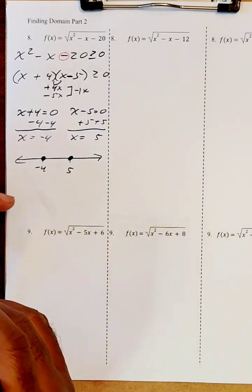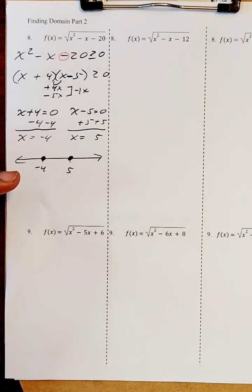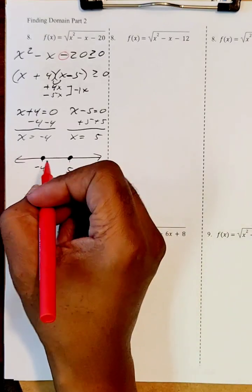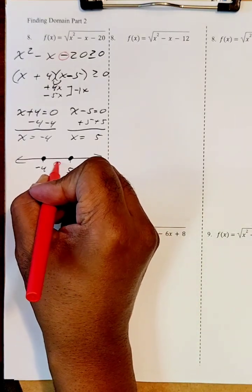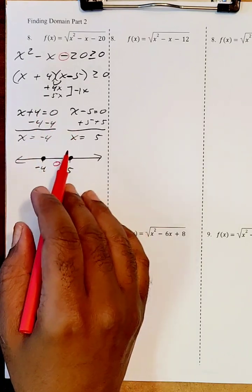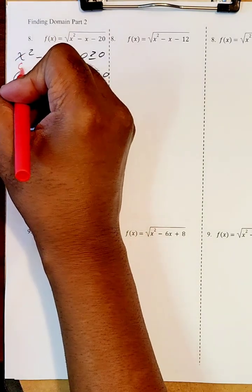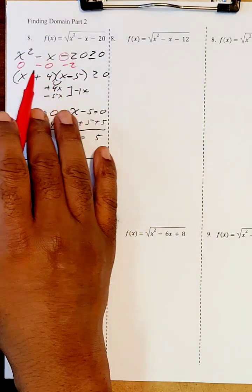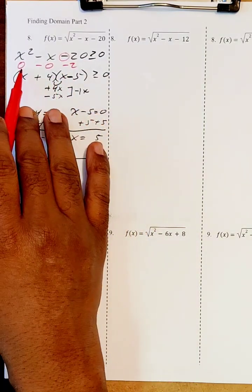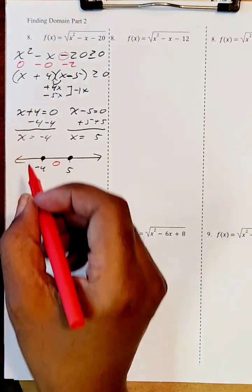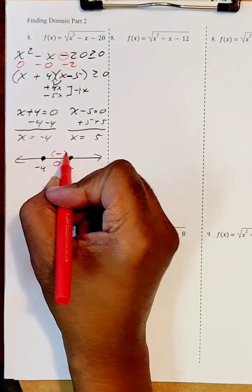I need to check these three regions. I like to use ten a lot, but zero is also a good number and it's right here in the middle, so I'll use zero for x. Zero squared is zero, minus zero, minus two — zero take away zero then minus two is going to be negative two. That means this region is negative.